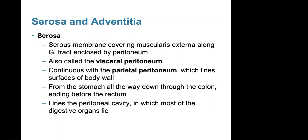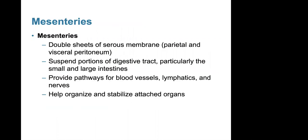The serosa is a serous membrane covering the muscularis externa along the GI tract, enclosed by the peritoneum. Also called the visceral peritoneum, it is continuous with the parietal peritoneum, which lines the body wall from the stomach down through the colon, ending before the rectum, and lines the peritoneal cavity in which most digestive organs lie. Mesenteries are double sheets of serous membrane — parietal and visceral peritoneum — that suspend portions of the digestive tract, provide pathways for blood vessels, lymphatics, and nerves, and help organize and stabilize the attached organs.